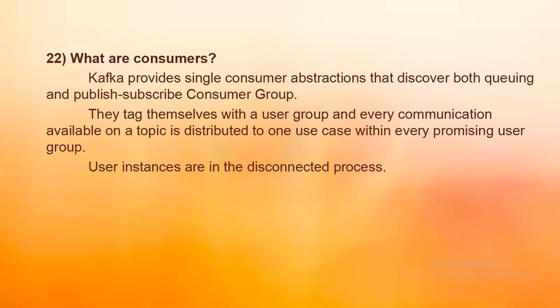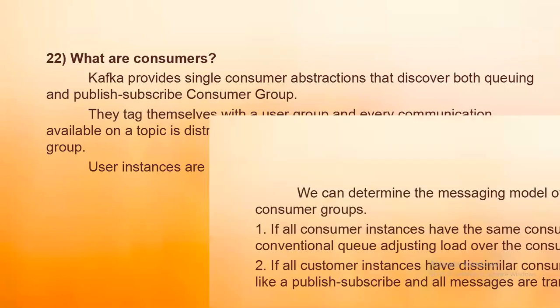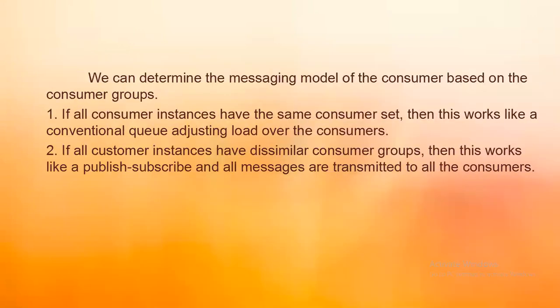Next one is: what are consumers? Kafka provides a single consumer abstraction that covers both queuing and publish-subscribe models — the consumer group. Consumers tag themselves with a consumer group name, and every message available on a topic is delivered to one consumer instance within every subscribing consumer group. Consumer instances can be in separate processes.